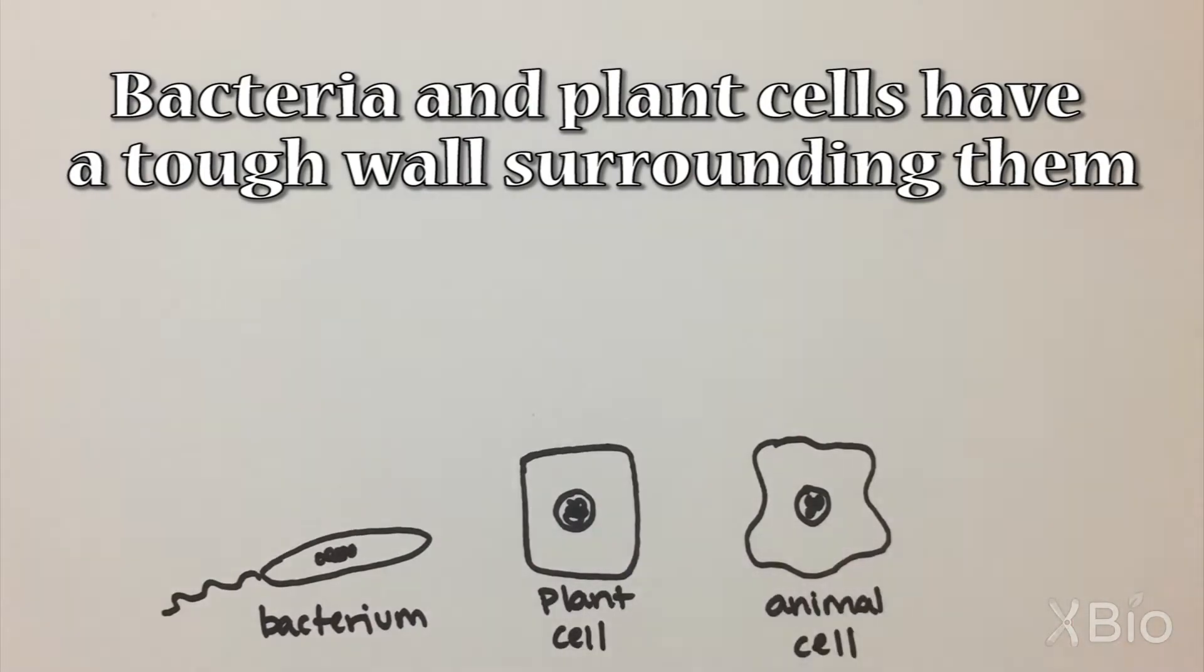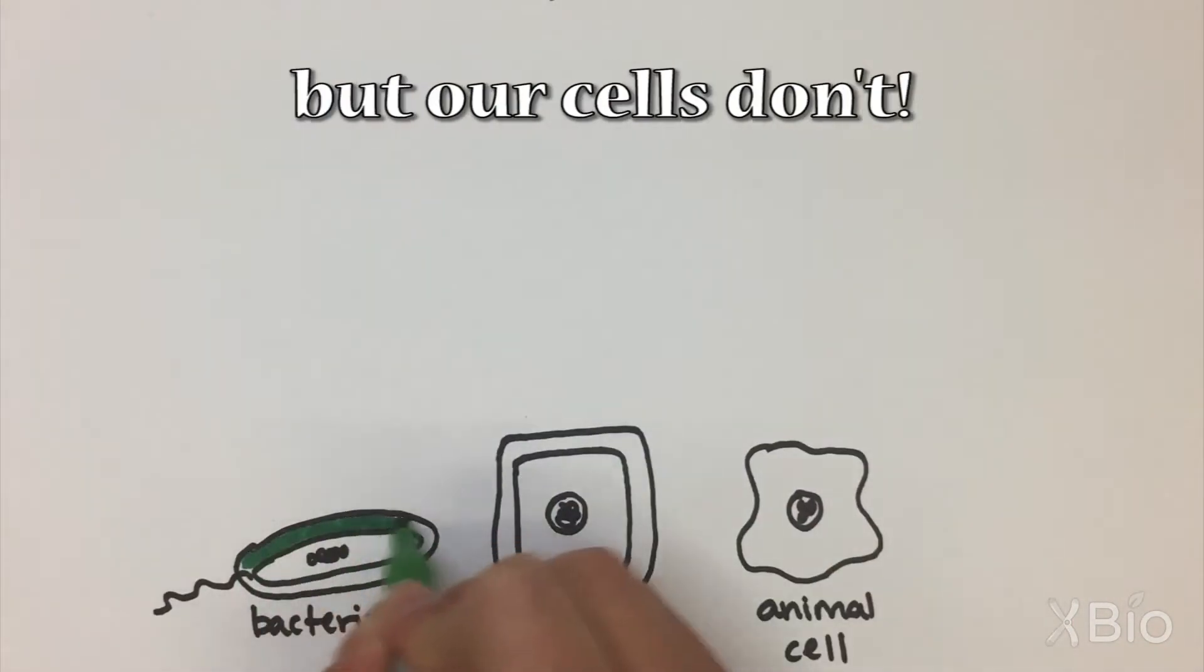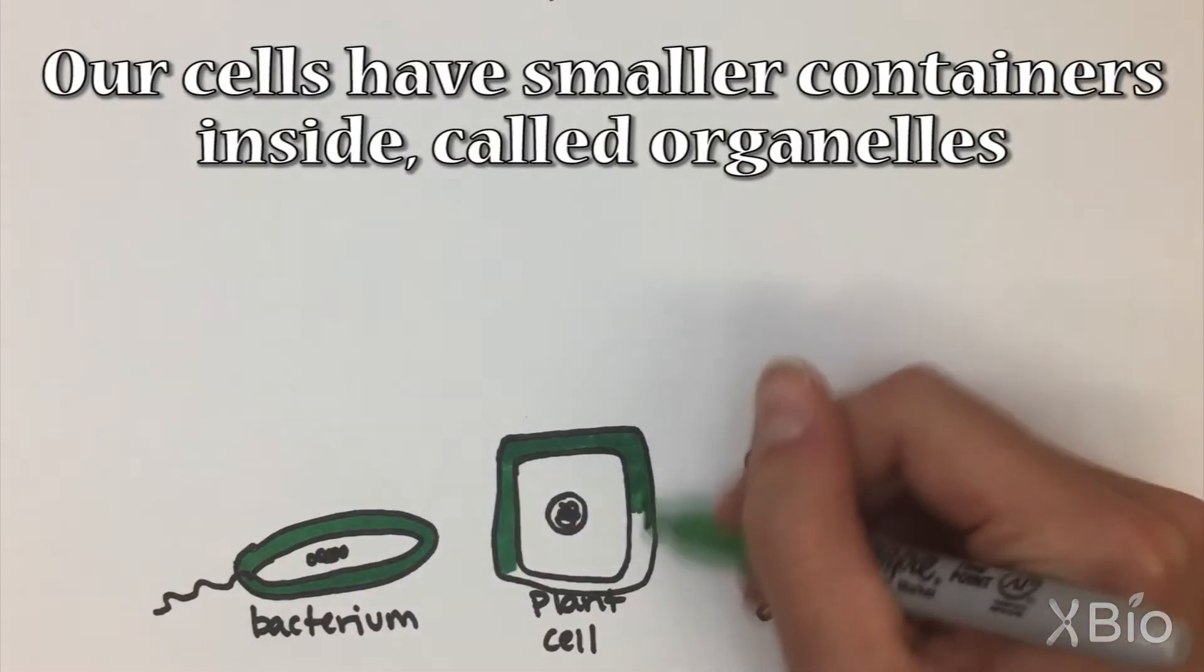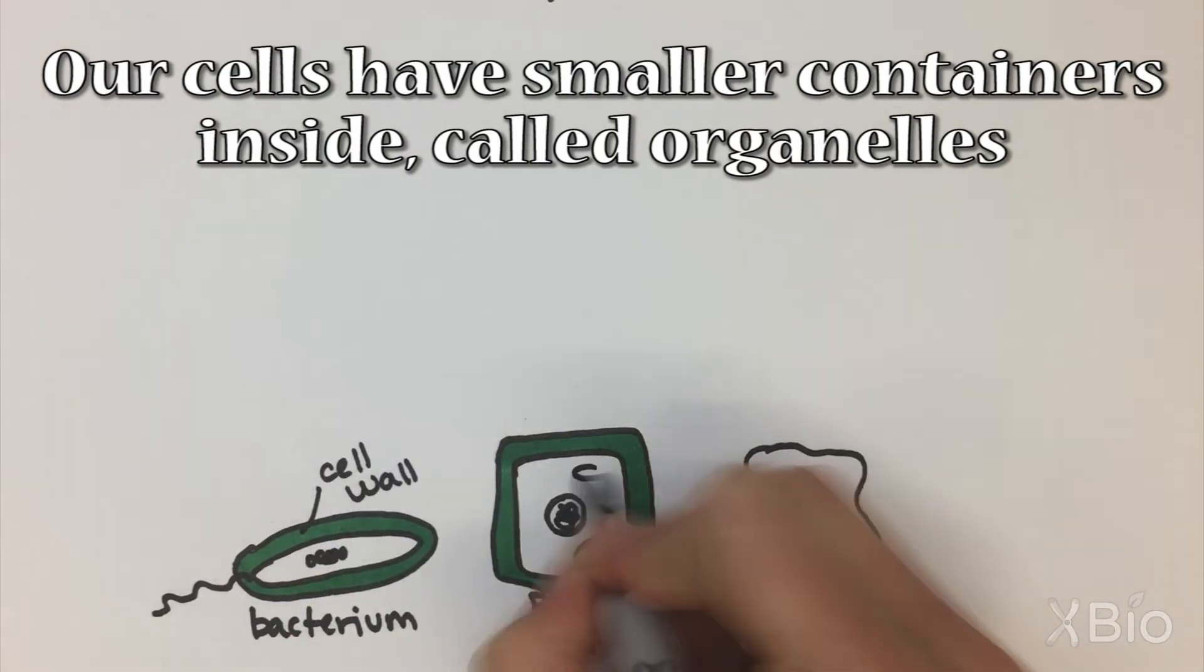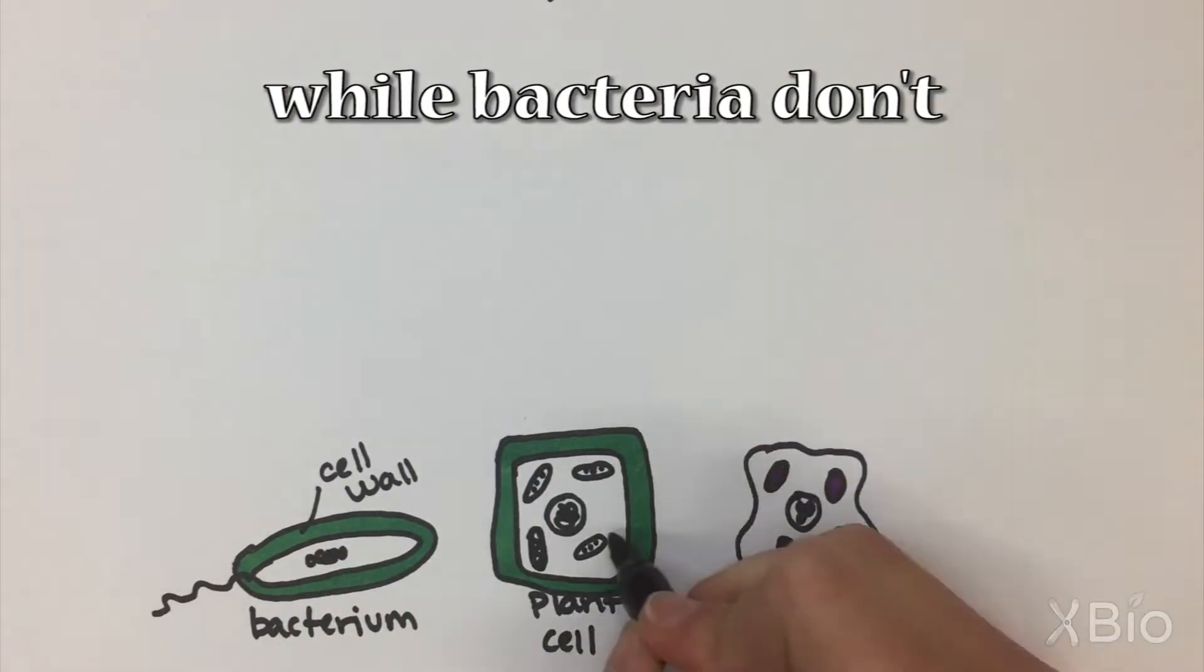Bacteria and plant cells have a tough wall surrounding them, but our cells don't. Our cells have smaller containers inside, called organelles, while bacteria don't.